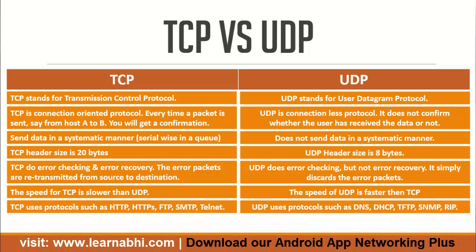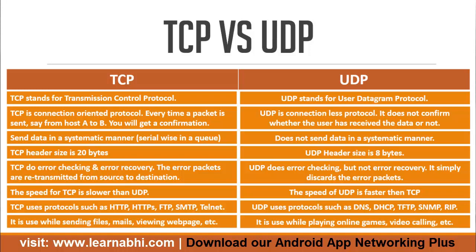TCP uses protocols such as HTTP, HTTPS, FTP, SMTP, Telnet, etc. On the other hand, UDP uses protocols such as DNS, DHCP, TFTP, SNMP, RIP, etc. TCP is used while sending files, emails, viewing web pages, and viewing online videos.